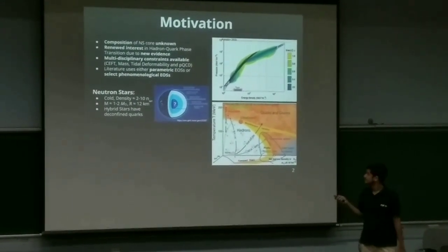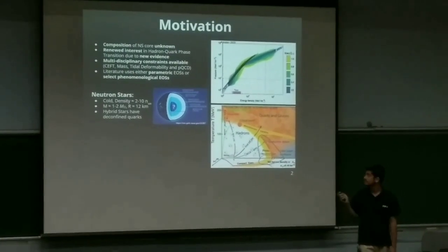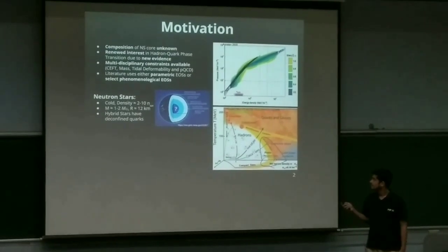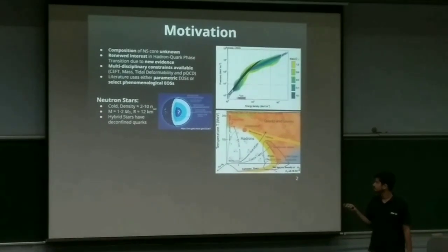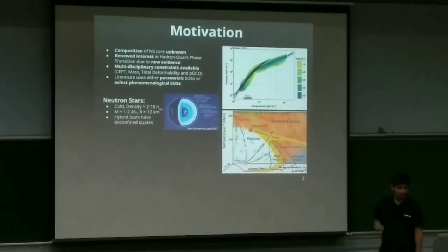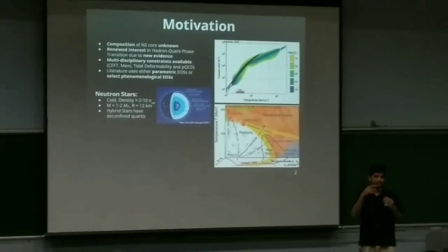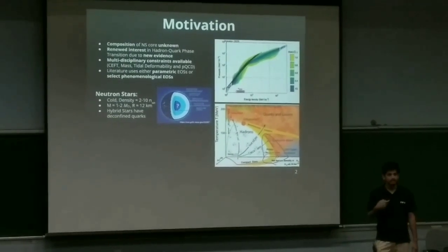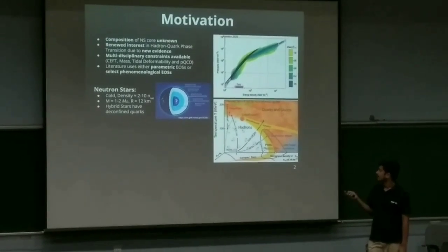So this has gained interest in the community for studying the hadron to quark phase transition. Also there are multidisciplinary constraints available which we can use from nuclear theory, nuclear experiment, astrophysical observations, and also theories like quantum chromodynamics. The literature that studies this uses a parametric equation of state. Basically they construct, take some parameters like polytropes, and vary polytropic indices to construct equation of state. But that doesn't give an insight into the physics which is going inside that matter.